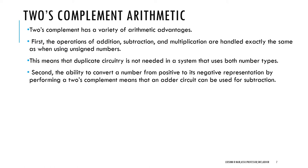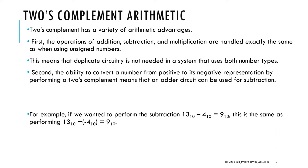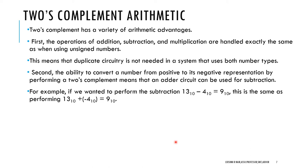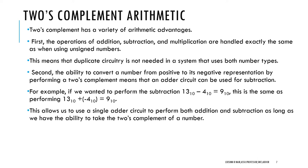The ability to convert numbers from positive to their negative representation by performing 2's Complement means that an adder circuit can be used for subtraction as well. For example, suppose we want to do 13 minus 4 equals 9. We can convert this operation as 13 plus minus 4 equals 9. So adding 13 to the 2's Complement of 4 gives the same result, and we can use the same adder circuit for implementing this subtraction.